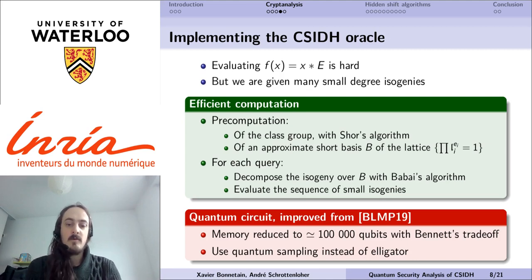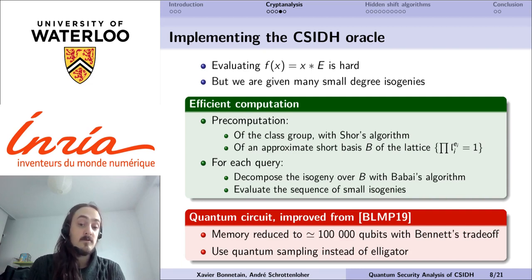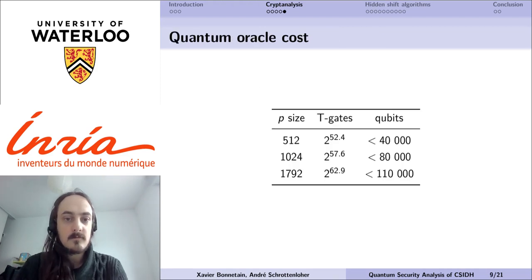In practice, for our quantum circuit, we built upon the work of Bernstein-Lange-Martindale-Panny from last year, with two main differences. The first one is that we reduced the number of qubits from hundreds of millions to hundreds of thousands at worst, using some intermediate uncomputations and Bennett's trade-offs. When we needed to sample points over an elliptic curve, we used quantum sampling instead of Elligator.